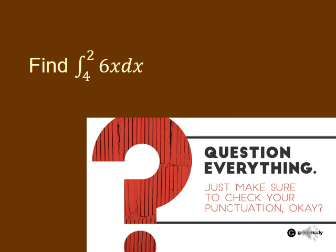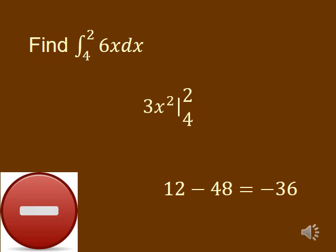One more question: find the definite integral from 4 to 2 of 6x dx. The important thing about this one is that the bounds are written backwards from all the other problems — the larger number is actually on the bottom this time. That's okay. You still need to plug in the top number first and then the bottom number and subtract in that order. So I take 3 times 2², which is 3 times 4 = 12, and then 3 times 4², or 3 times 16 = 48. Subtracting those gives a negative answer: negative 36. We'll talk later about what that actually means.